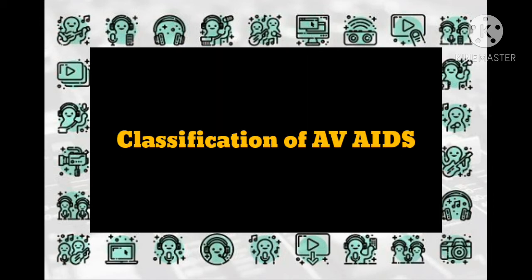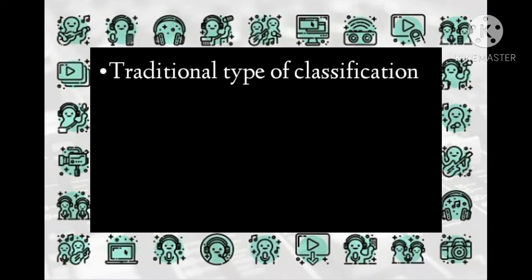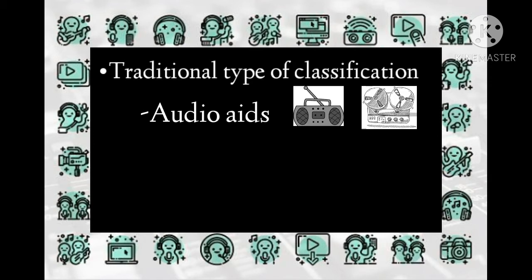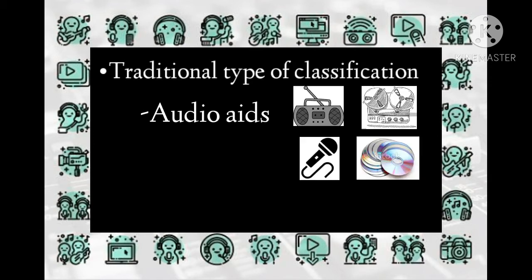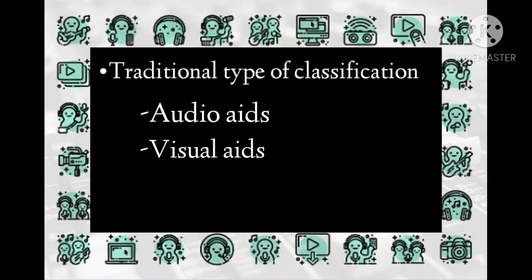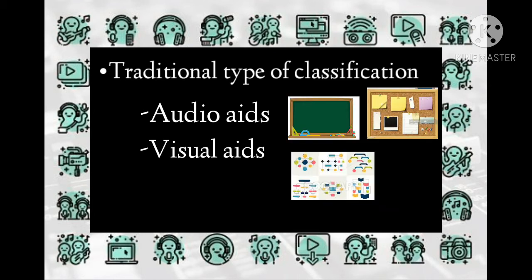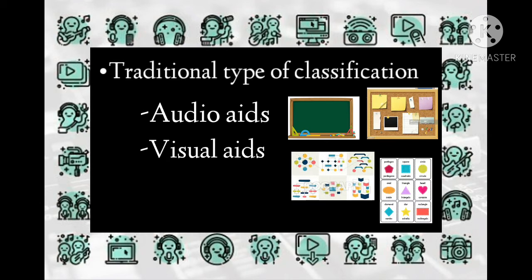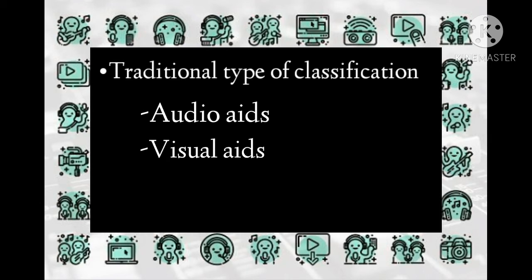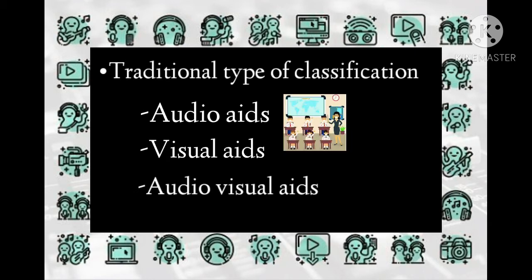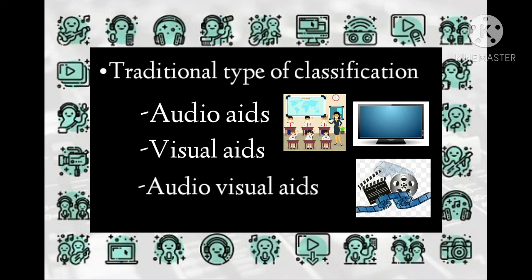Classification of audiovisual aids — traditional type: Number one, audio aids, examples are radio, tape recorder, mic, CDs, microphone, headphone, etc. Number two, visual aids, examples are chalkboard, bulletin board, charts, drawings, posters, pictures, exhibits, flashcards, flannel boards, etc. Number three, audiovisual aids, examples include lecture demonstration, television, films, and computers.